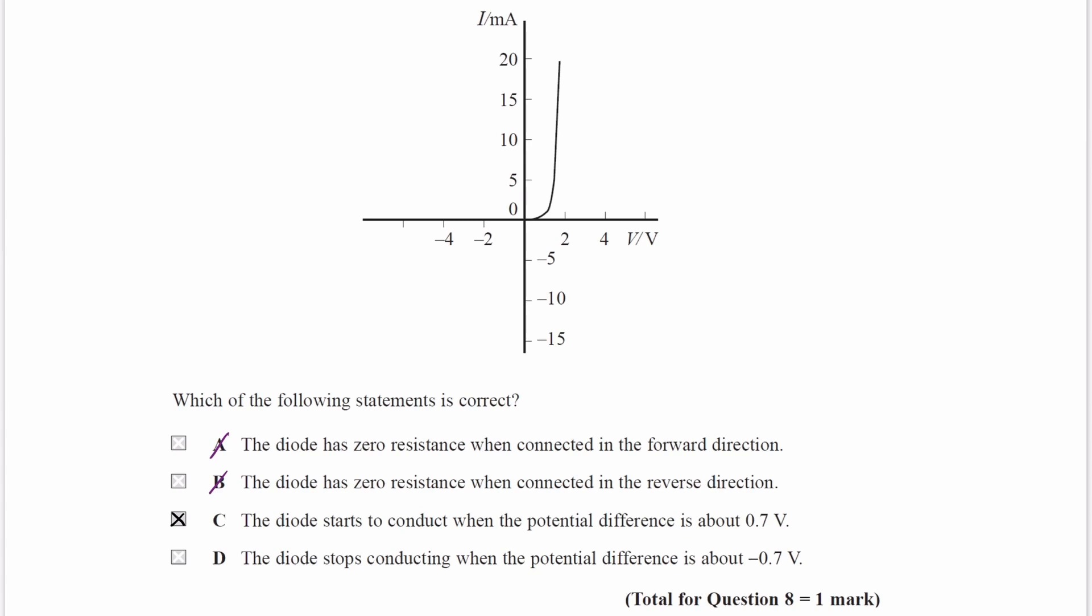And D is not correct, because it's when the potential difference drops below 0.7 volts, that's when the diode would stop conducting. So it's 0.7 volts, that is the threshold below which it doesn't conduct, and above which it does conduct.